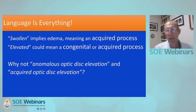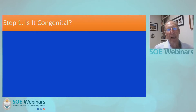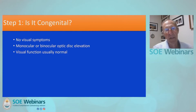With those terms in mind, let's get to the first step of the analysis. The first step is determining whether the optic disc elevation is congenital, because if it is, the workup will be very different. What we know about congenital optic disc elevation is that the patient typically has no visual symptoms, and this is a finding made incidentally in your office.